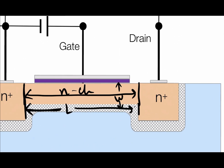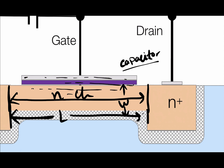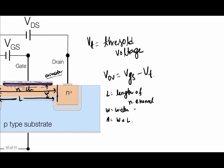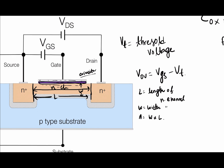Here we have the metal plate, the inter-semiconductor, and the dielectric — these three combinedly make a capacitor. This capacitor is formed due to the silicon dioxide SiO2 layer. COx is the capacitance per unit area, with units of farads per meter squared.